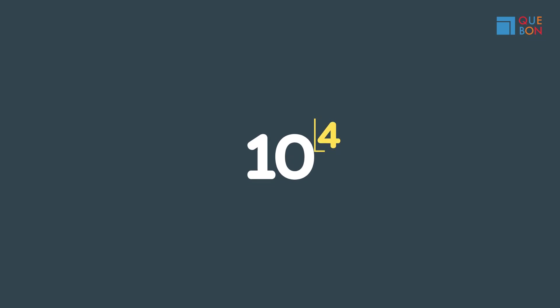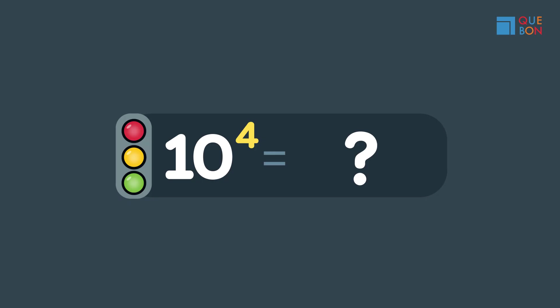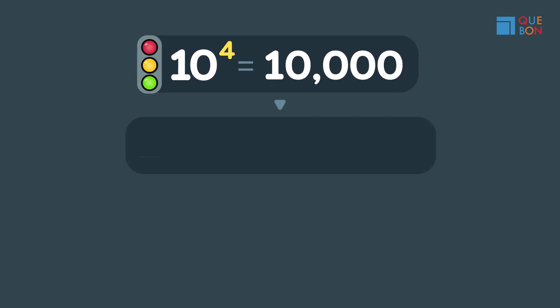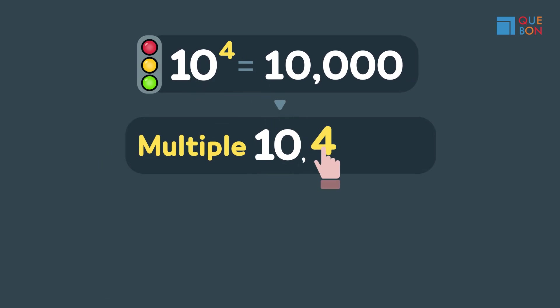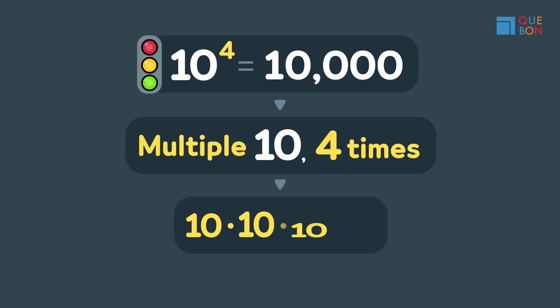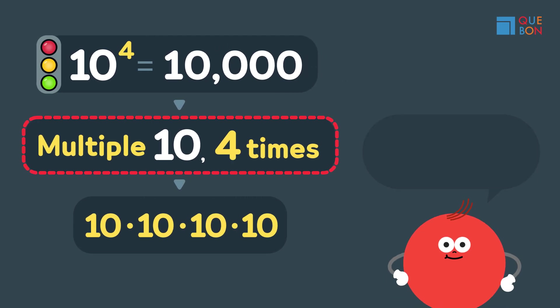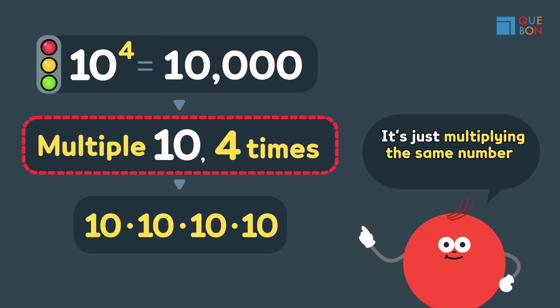What's ten to the power of four? It's a product — ten thousand — multiply ten four times: ten, ten, ten, ten. We learned about exponential functions; it's just multiplying the same number repeatedly.